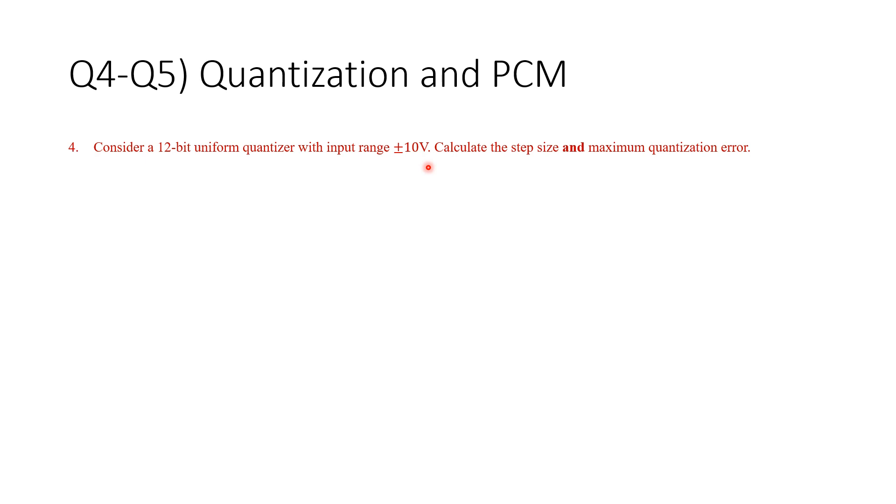Now, I'm going to show the answers. The step size is delta V. It's 2 MP over L. We should know this formula. We substitute MP as the peak value. And we got the number of levels is 2 raised to power N, which is 12. So, this is the final answer. Remember that the maximum error is delta V over 2, which is going to be this number divided by 2.